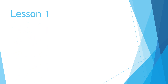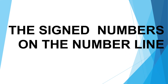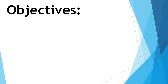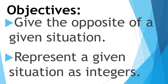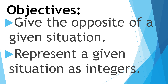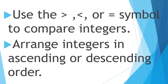Our first lesson for today is about integers or the signed numbers on the number line. Our objectives for this lesson are: give the opposite of a given situation, represent a given situation as integers, use the greater than, less than, or equal symbol to compare integers, and arrange integers in ascending or descending order.